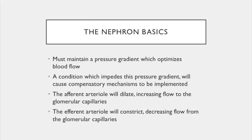A condition which impedes this pressure gradient will cause compensatory mechanisms to be implemented. For example, in severe infection or sepsis with hypotension, the afferent arteriole — bringing blood to the glomerulus — will dilate, increasing blood flow to the glomerular capillaries. At the same time, the efferent arteriole will constrict, decreasing flow away from the glomerular capillaries, increasing pressure to allow the glomerulus to be perfused appropriately. That's the basics of renal anatomy for the CCRN.